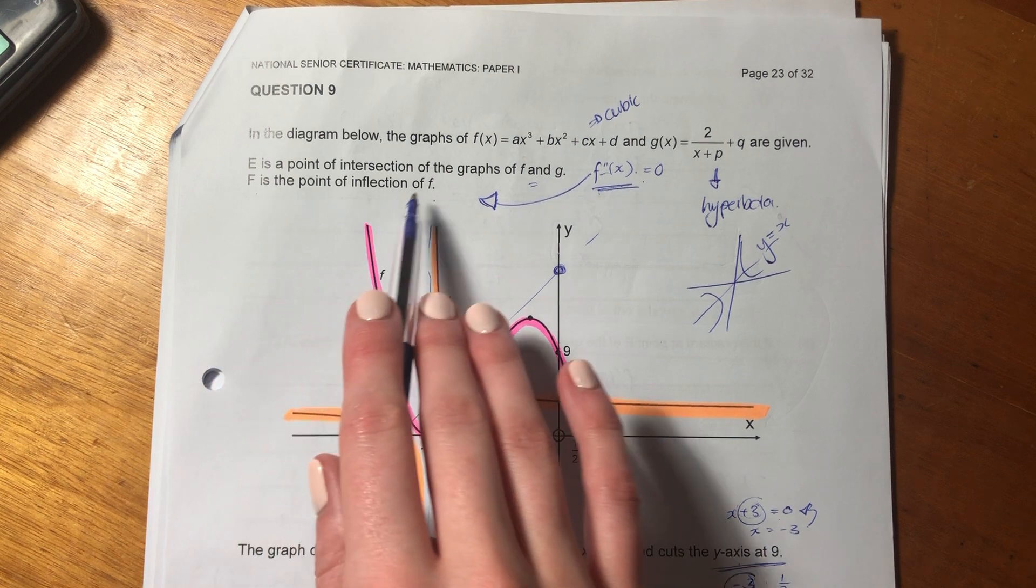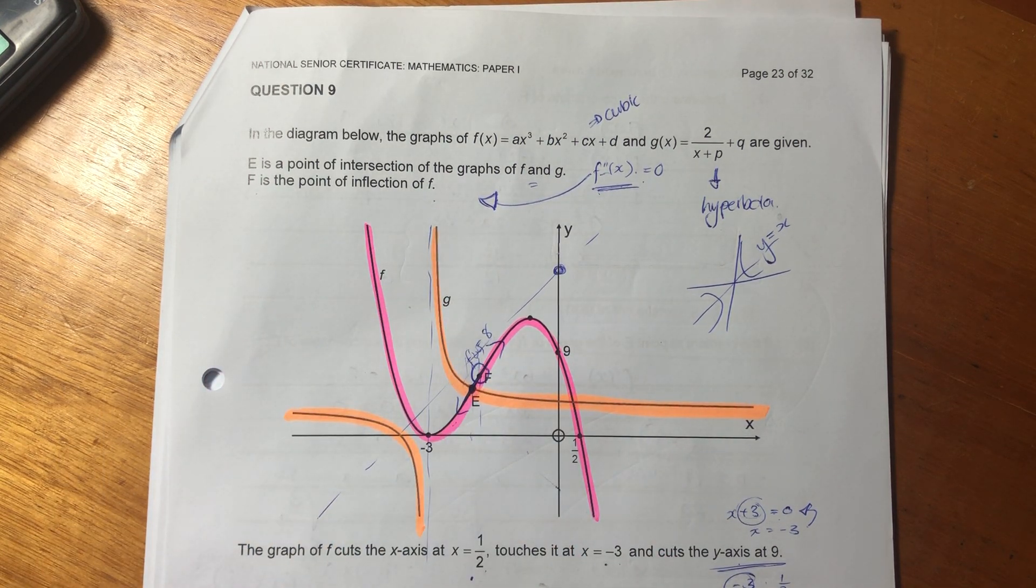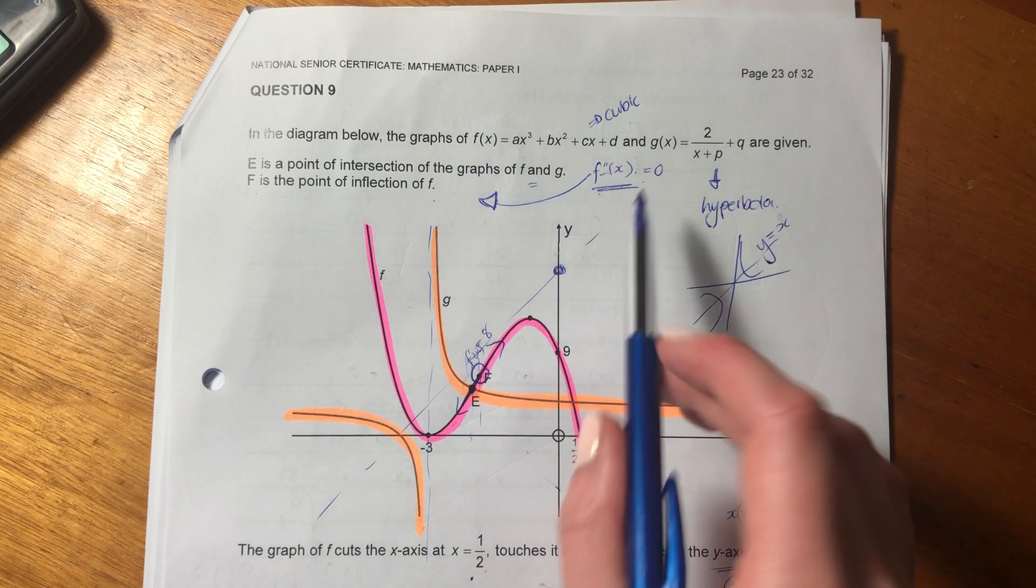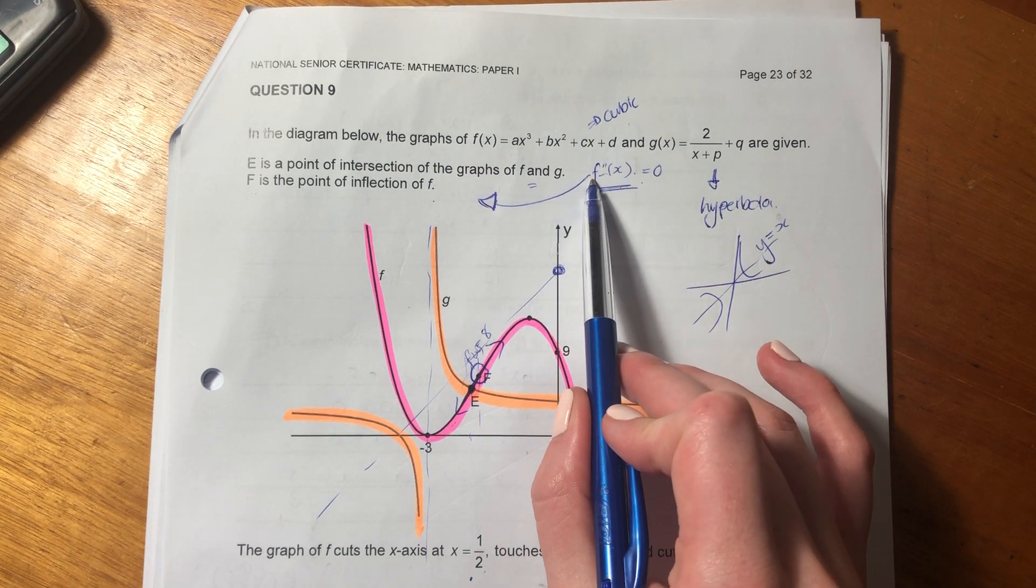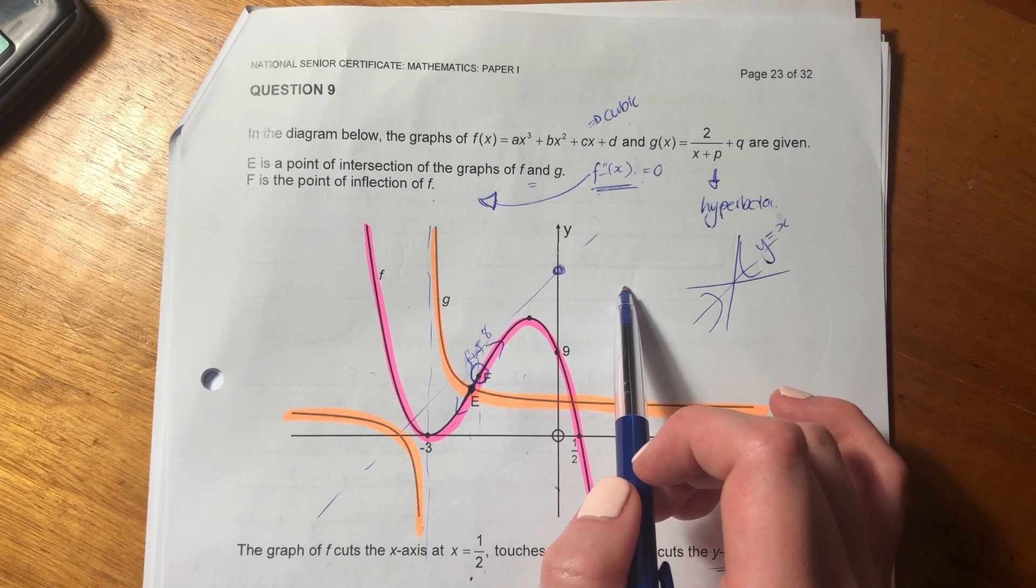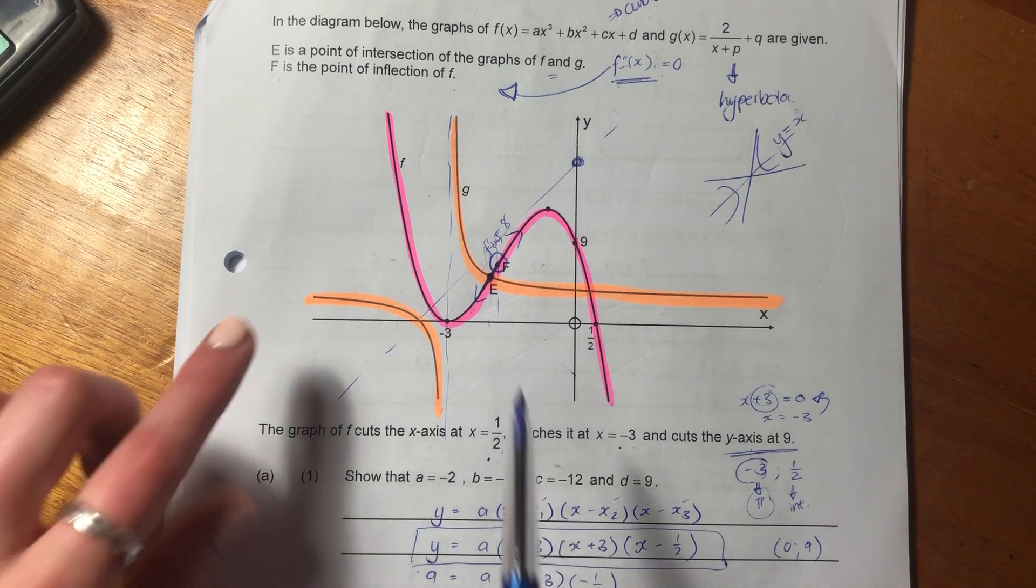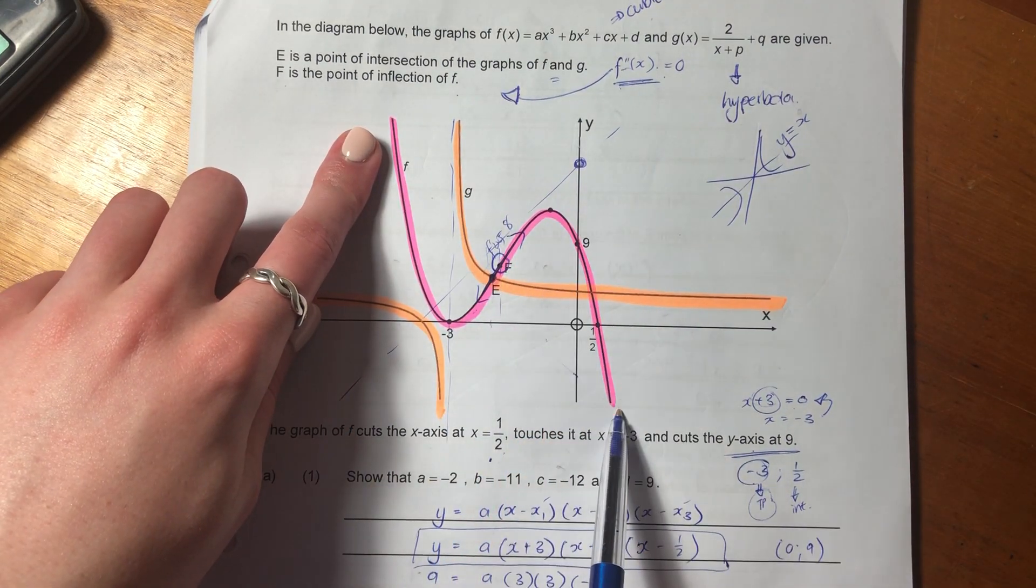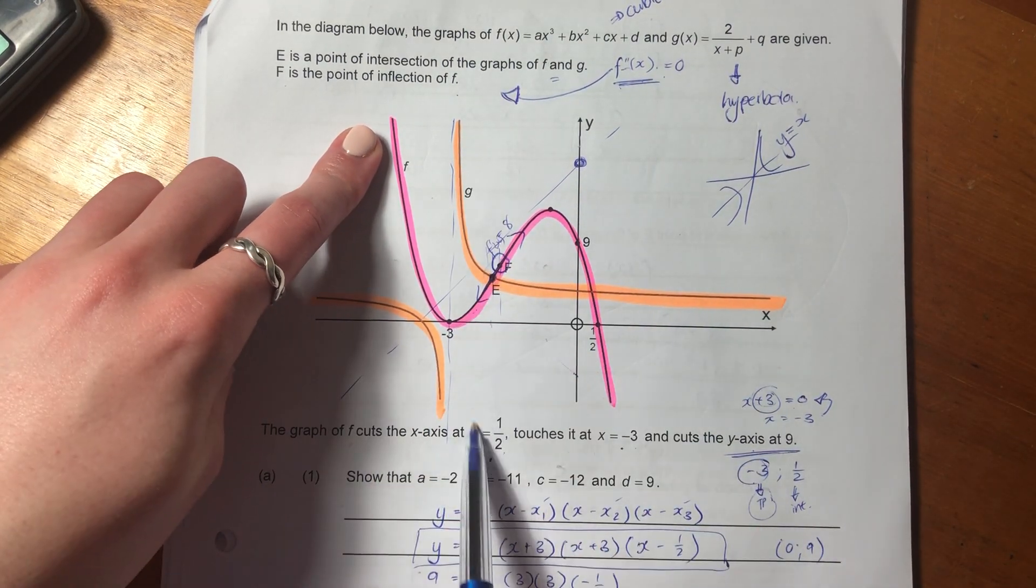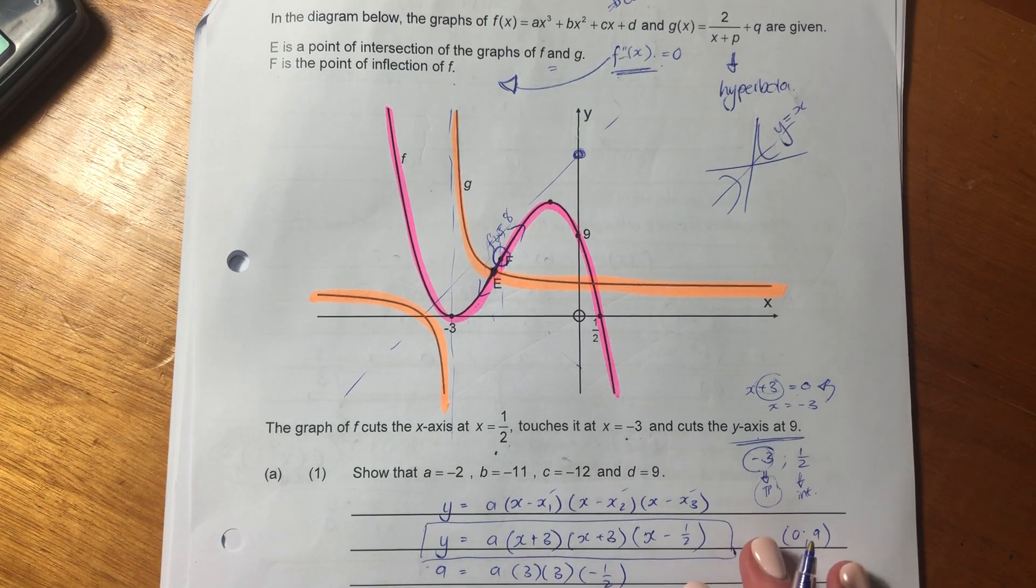F is the point of inflection of f. Remember, when we say point of inflection, what we mean is that the second derivative of f equals 0. I've just put the cubic in pink and the hyperbola in orange, and the other scribbles around it I'll come back to as we get into the question.